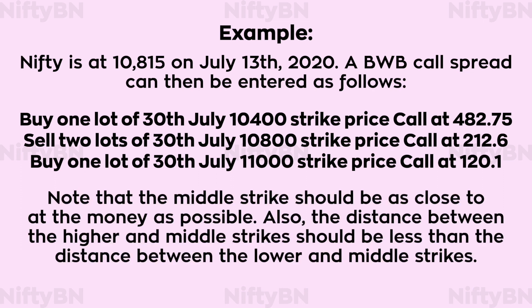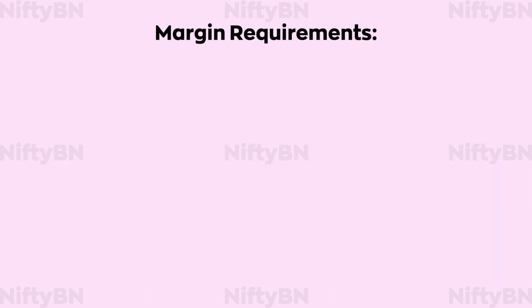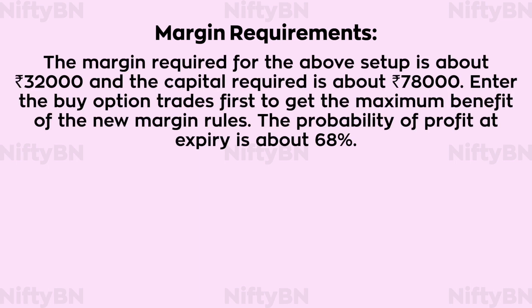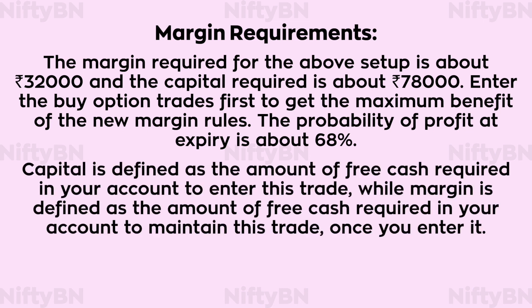Note that the middle strike should be as close to the money as possible. Also, the distance between the higher and middle strikes should be less than the distance between the lower and middle strikes. The margin required for the above setup is about Rs 32,000 and the capital required is about Rs 78,000. Enter the buy option trades first to get the maximum benefit of the new margin rules. The probability of profit at expiry is about 68%. Capital is defined as the amount of free cash required in your account to enter this trade, while margin is defined as the amount of free cash required in your account to maintain this trade once you enter it.